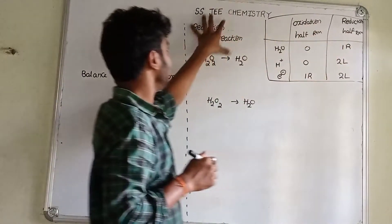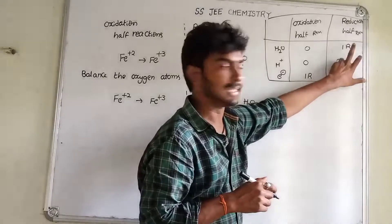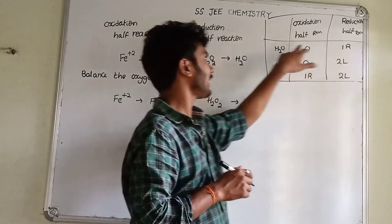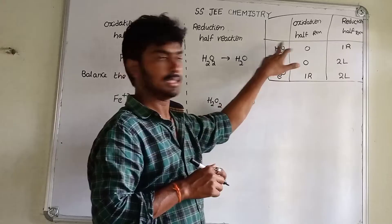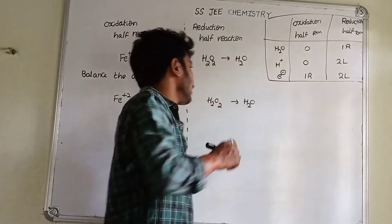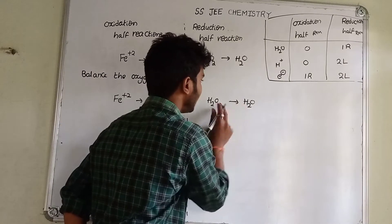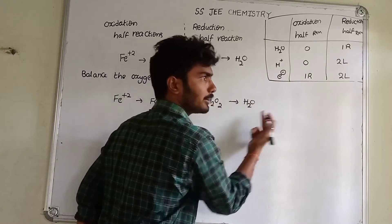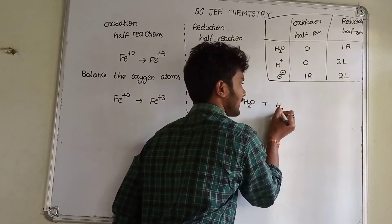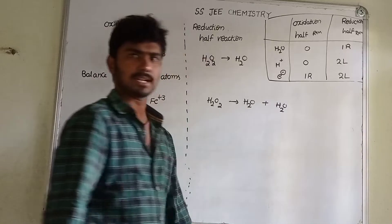Now, the reduction reaction — on the right side, we add 1 H₂O. So the reduction reaction has 1 H₂O on the right side. This gives us H₂O plus H₂O.